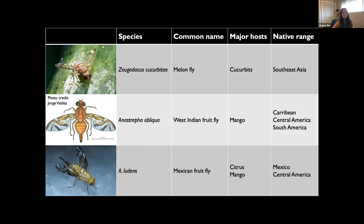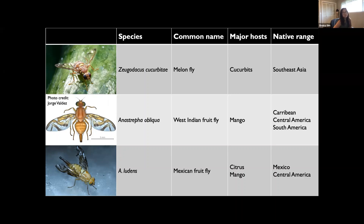The species I'll be presenting chromosome-scale genomes of today are the melon fly, Zeugodacus cucurbitae, the West Indian fruit fly, Anastrepha obliqua, and the Mexican fruit fly, Anastrepha ludens. All of these are very destructive pests attacking cucurbits, mangoes, and citrus respectively.